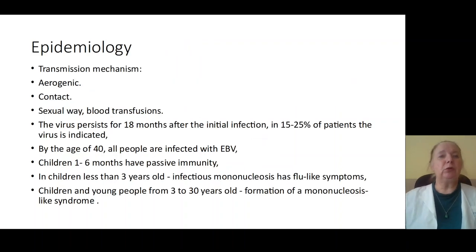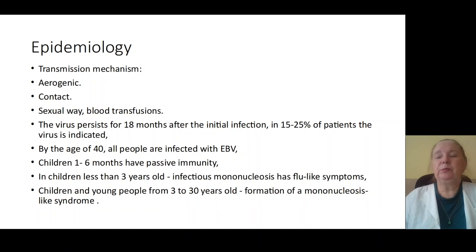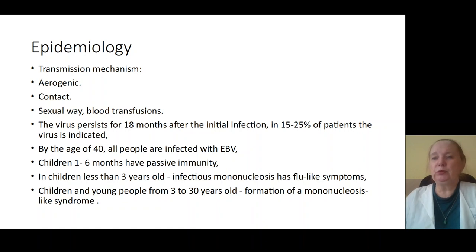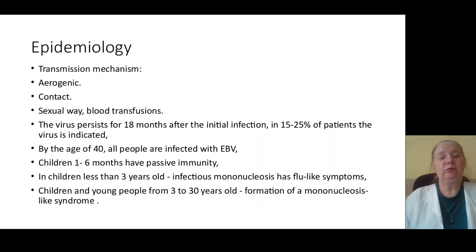Aerogenic and contact mechanisms of transmission may include sexual contact and blood transfusions. The virus persists in patients for more than 80 months after primary infection, and in 15% to 25% of patients causes recurrence of infection. Patients older than 40 years are all infected with Epstein-Barr virus. Children from one month up to six months have passive immunity from this infection.